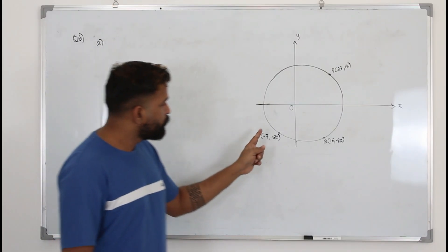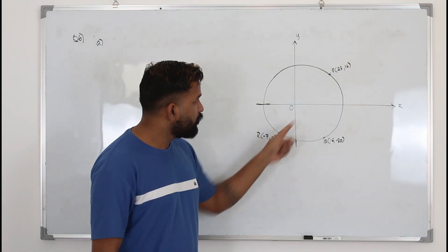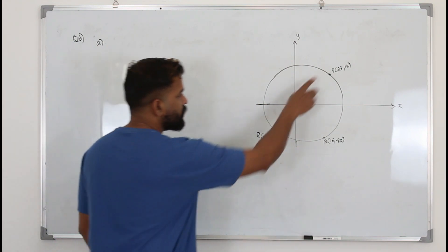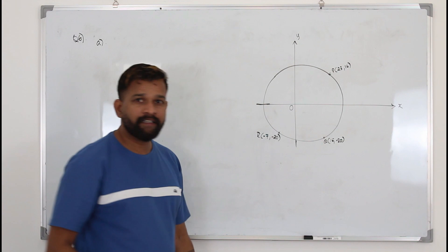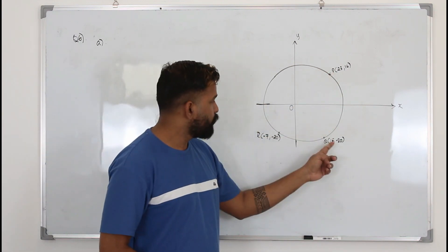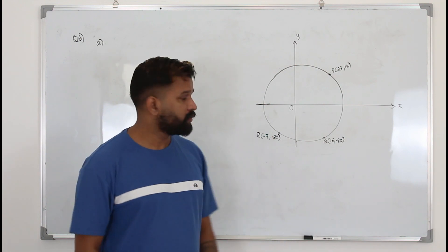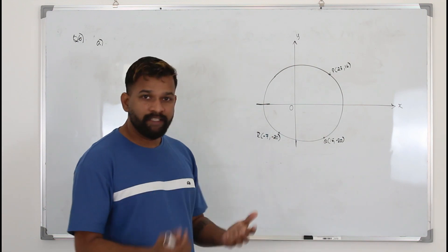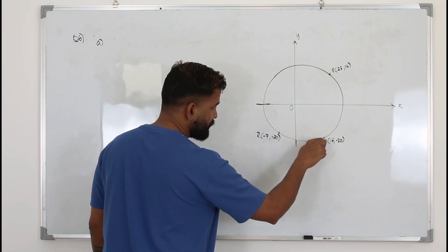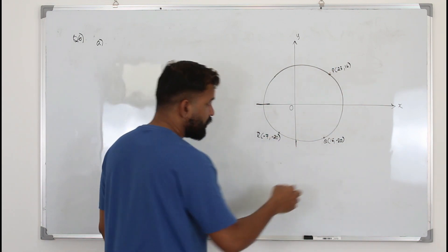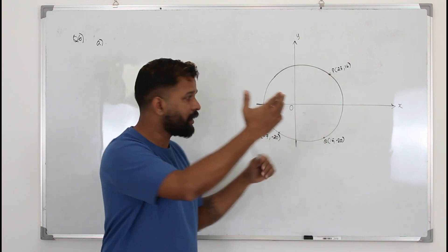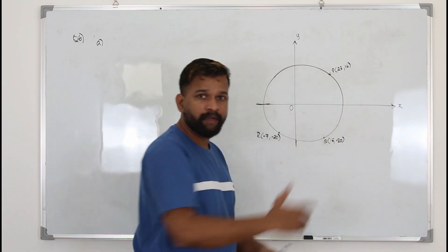In part A, they want you to prove that angle PQR is 90 degrees, meaning this is a right angle triangle. There are several ways to prove this — you can find the distance between the points and apply Pythagoras' theorem — but the easier way is finding the slope of each line. If one slope is the negative reciprocal of the other, the two lines are perpendicular.